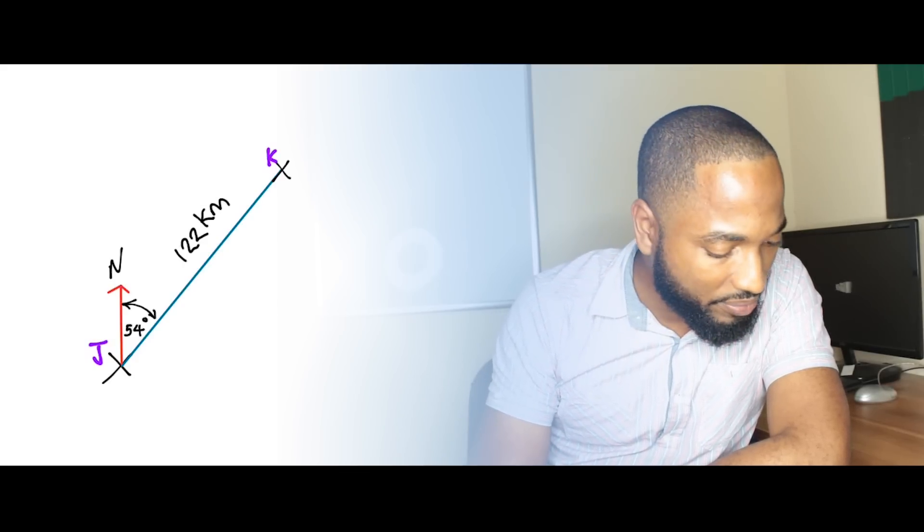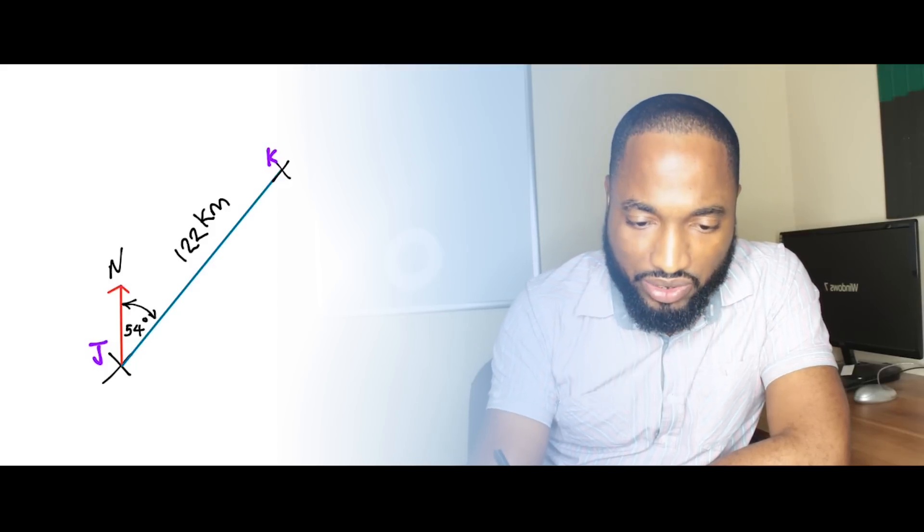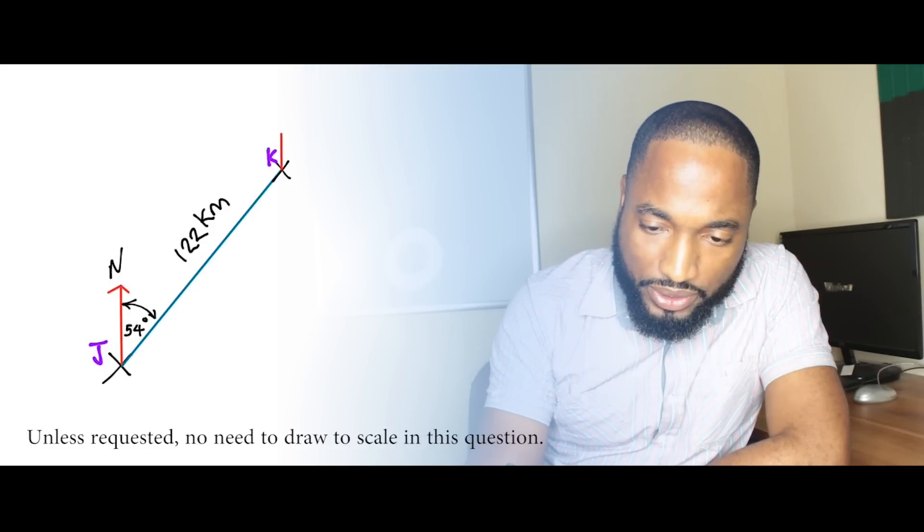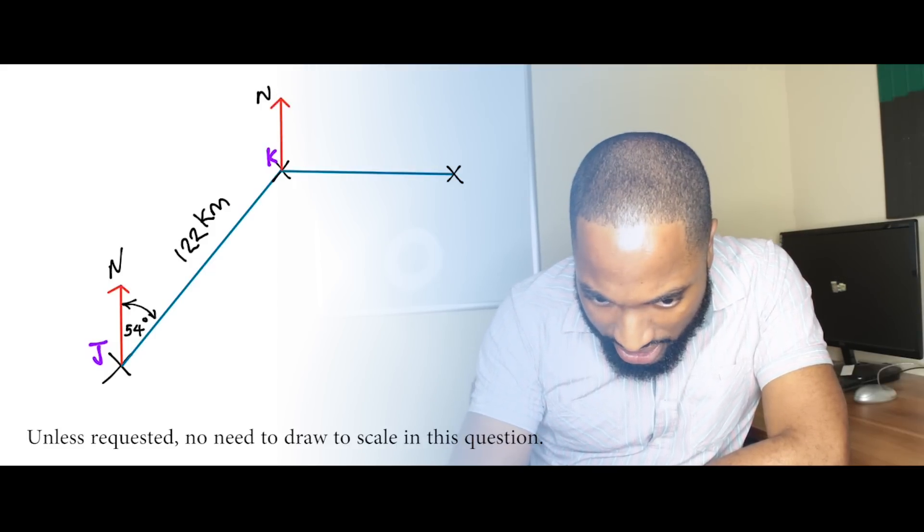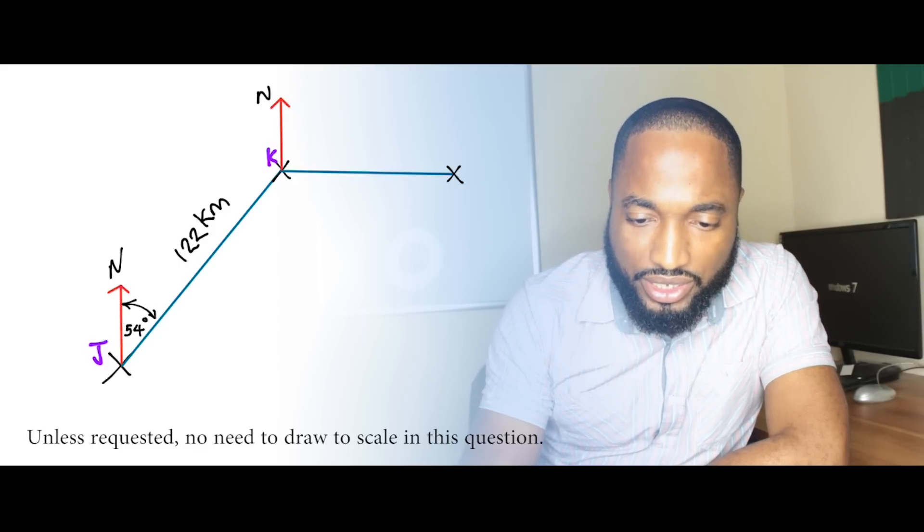All right, next up we have point L, which is to the east. So you're going to draw a straight line going to the east after you put in your north. So that's going towards L there. Put in the point, and that's 60 kilometers in distance.